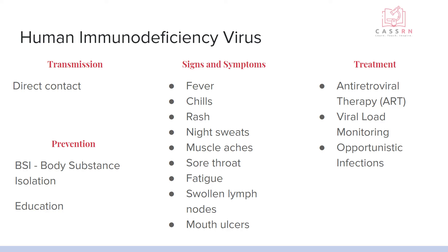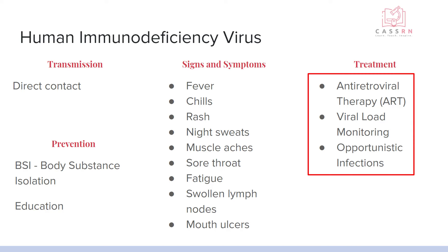As nurses, it's always very important to assume that everybody has some sort of communicable disease and to protect ourselves as necessary. The treatment for HIV is antiretroviral therapy (ART) because the virus itself is a retrovirus. We want to monitor the viral load and then watch for opportunistic infections — infections only people with HIV see, like Kaposi's sarcoma, a rare form of cancer — and treat them accordingly.